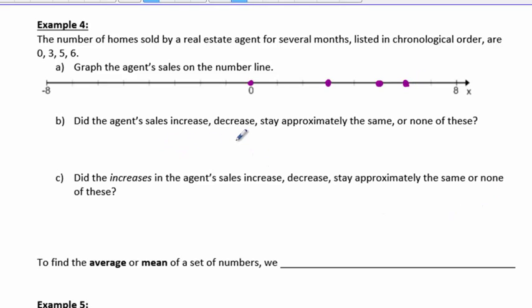Did the agent's sales increase, decrease, stay approximately the same, or none of these? They increased. The increases, you can see here, they went up each time.